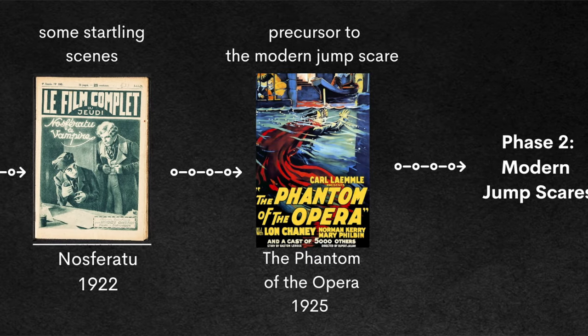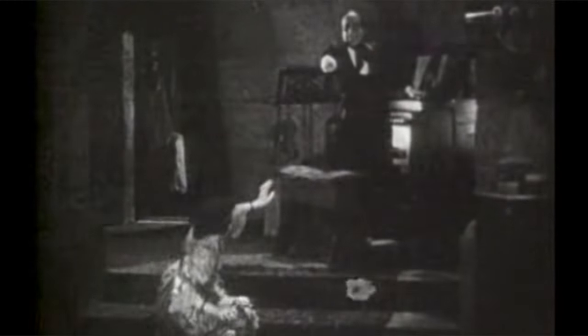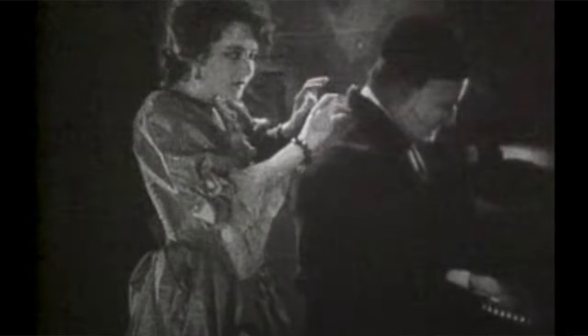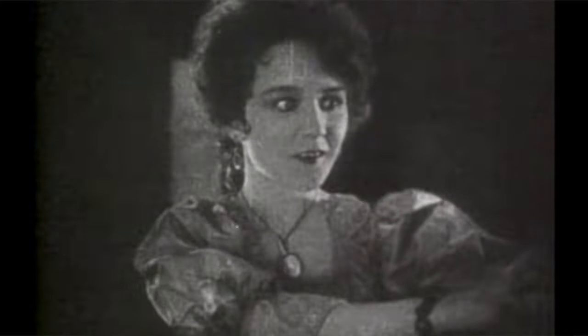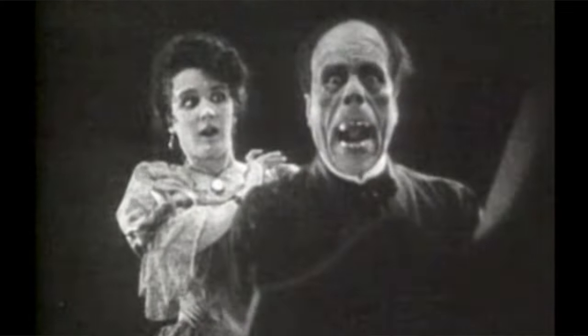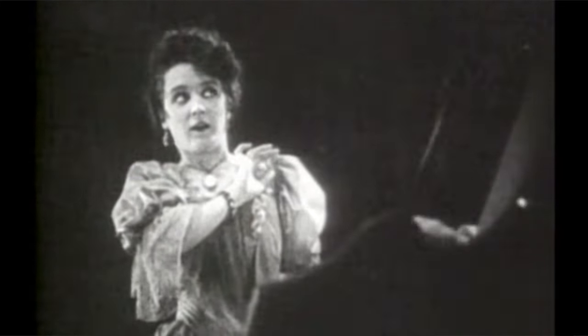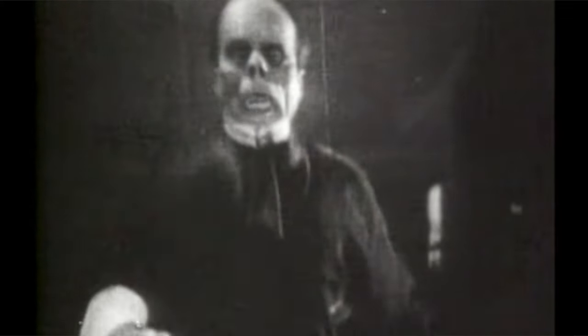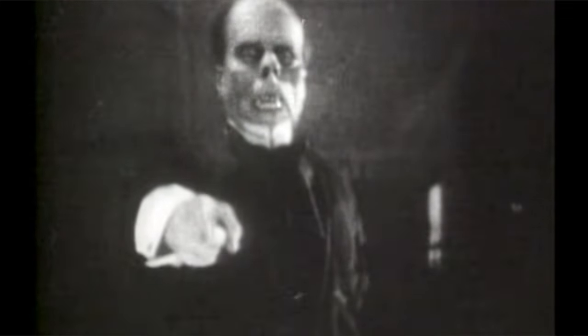The last really early cinema jump scare I want to talk about comes from 1925's Phantom of the Opera. A lot of historians claim this to be the first true jump scare before sound. Essentially, the Phantom removes his mask, the anticipation builds, and then you see this really scary face. Apparently it was quite a jump back in the day - some people at the premiere actually passed out when they saw it. It's easy for us in the modern age to dismiss it, but back then the scariest thing they had was scary books.